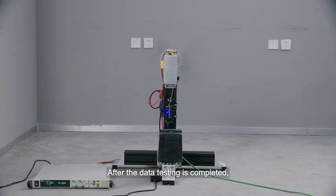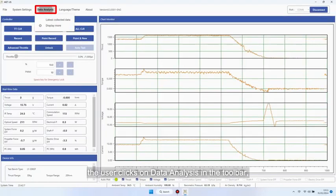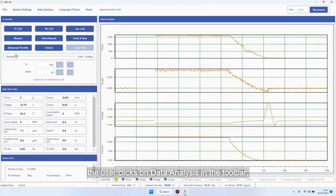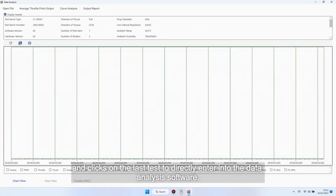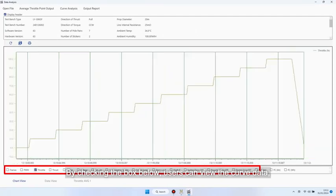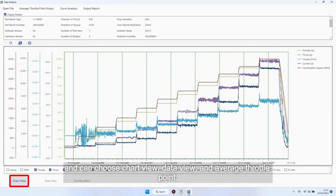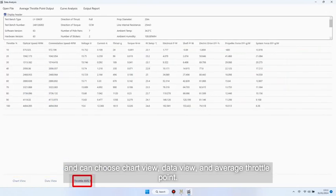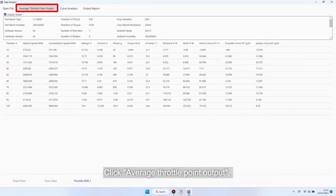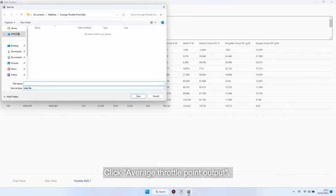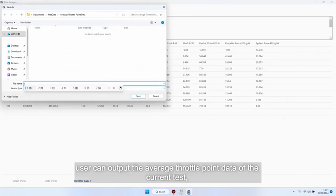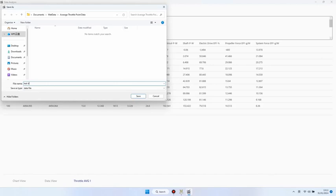After the data testing is completed, the user clicks on data analysis in the toolbar and clicks on the last test to directly enter into the data analysis software. By checking the box below, users can view the curve data and can choose chart view, data view, and average throttle point. Click average throttle point output. Users can output the average throttle point data of the current test and store as Excel form file.